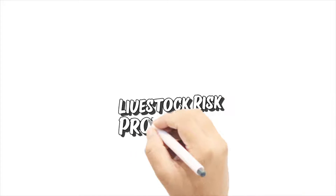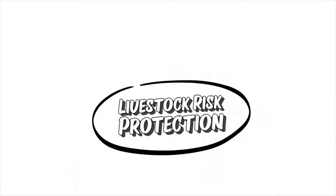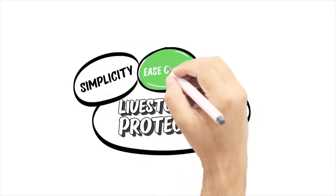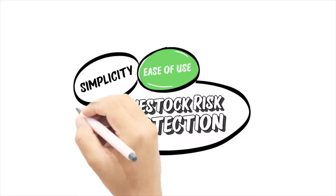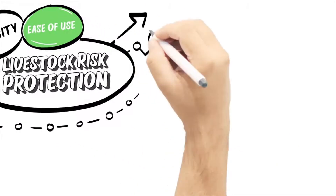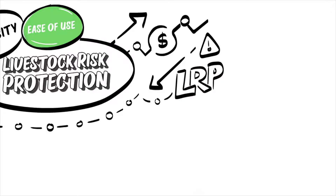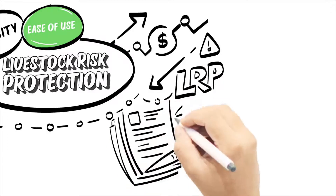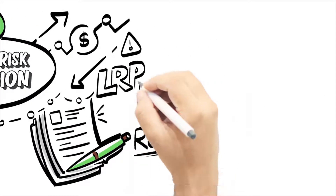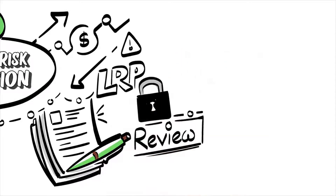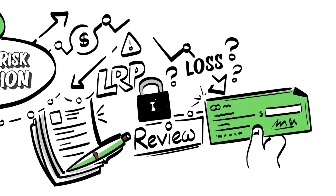One of the primary benefits of livestock risk protection is its simplicity and ease of use. Here we will outline three simple steps to managing price risk in LRP: first we'll discuss how to fill out your application, next we'll review establishing coverage, and finally we'll review what occurs if there is a loss.